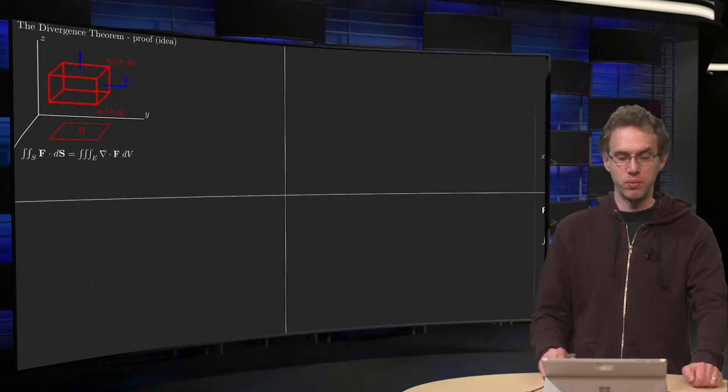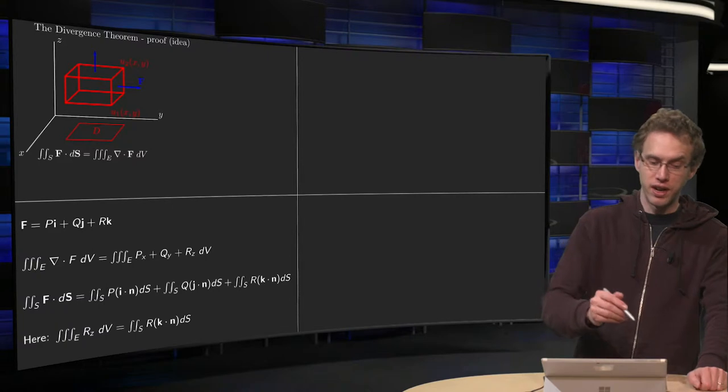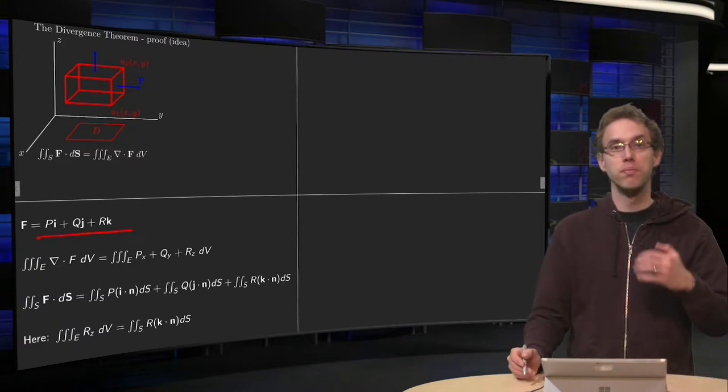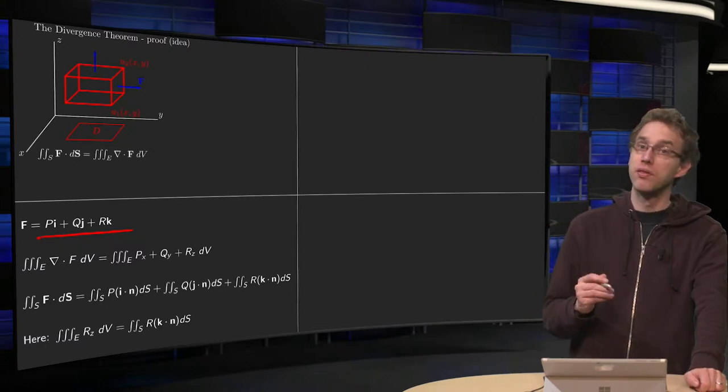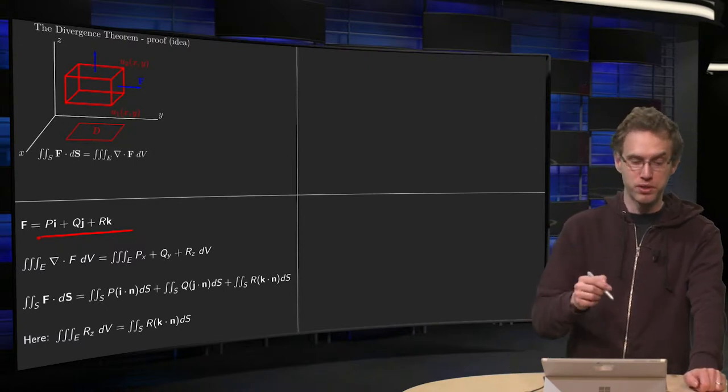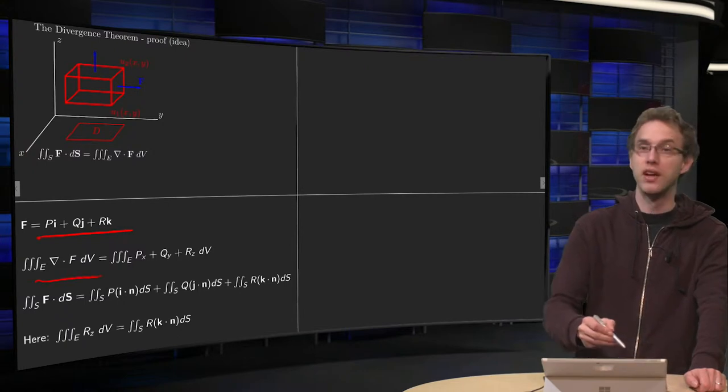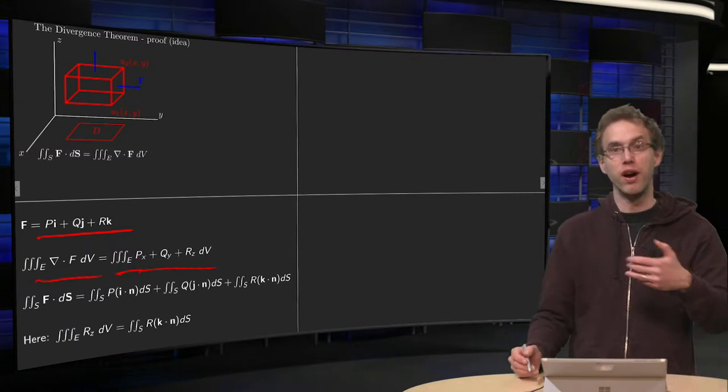So what do we do? Well first we write down F in its components P, Q, and R, and then we will write down what the triple integral is of the divergence of F. That's the triple integral of Px plus Qy plus Rz.